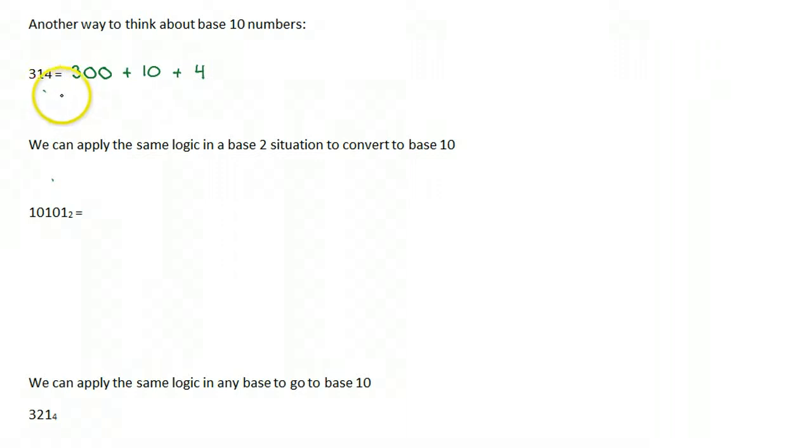I have three hundreds, so I can write that as 3 times 100. I have one tens, so I can write that as 1 times 10, and I have four ones, so I can write that as 4 times 1. So what we want to look for here is a pattern. And a pattern that you might notice here is that, well, this is base 10, right? So what happens if I do this? 100 can be written as 10 squared. 10 can be written as 10 to the power of 1. And if we remember our exponent rules, 1 can be written as 10 to the power of 0.